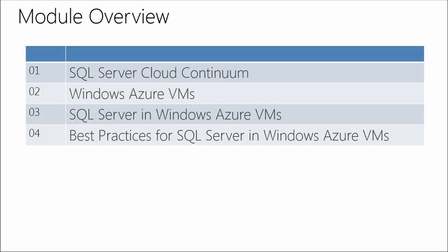Today we're going to be talking about four topics. First, we're going to introduce what we call the SQL Server Cloud Continuum — basically the path between on-premise and the cloud and the different iterations between them. Then we'll talk about Windows Azure Virtual Machines and the offering we have. Then we'll look specifically at SQL Server running in Windows Azure Virtual Machines, and finally we have some best practices associated with that.